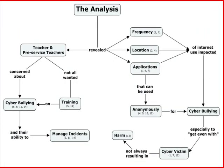Cybervictims and cyberbullies use the internet more frequently than non-victims and non-bullies. When cyberbullying incidents did occur, about 86% occurred at home. The internet applications used most often were email and instant messaging. The frequency of cyberbullying occurring anonymously ranged from 34% to 50%. Most cyberbullying was instigated for reasons relating to getting even.